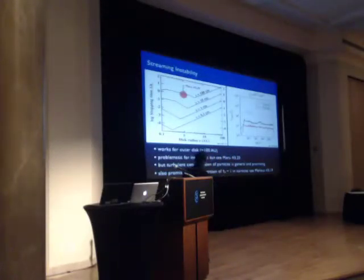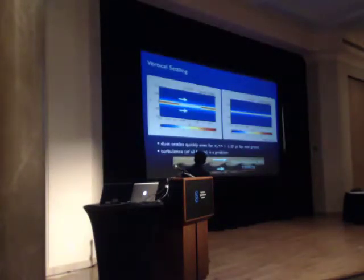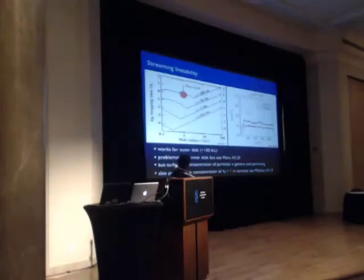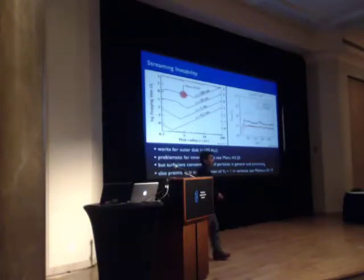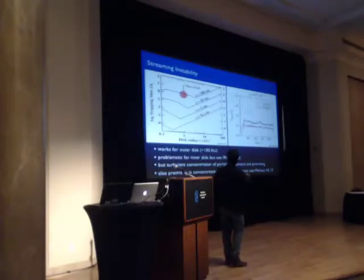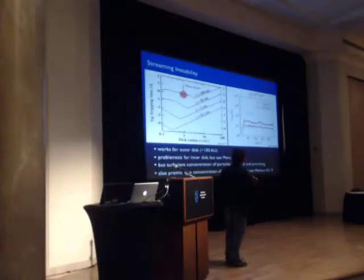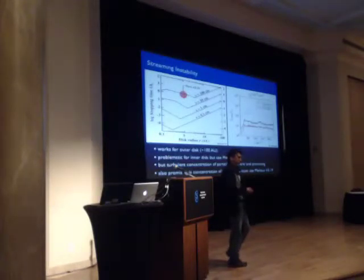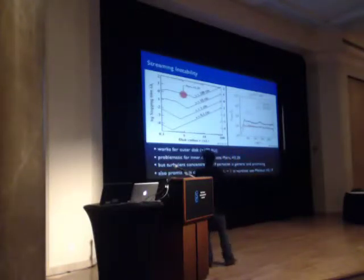Observationally, there's plenty of evidence for millimeter- to centimeter-sized things, which at one AU correspond to rather short stopping times on the order of 10⁻³ to 10⁻⁴ — which the streaming instability has a hard time clumping. When you knock the stopping time down from order 1 to order 0.01–0.1, the dust-to-gas ratios fall below Roche. This is really a problem for the inner disk where gas densities are high and particles are still too small to decouple from the gas.